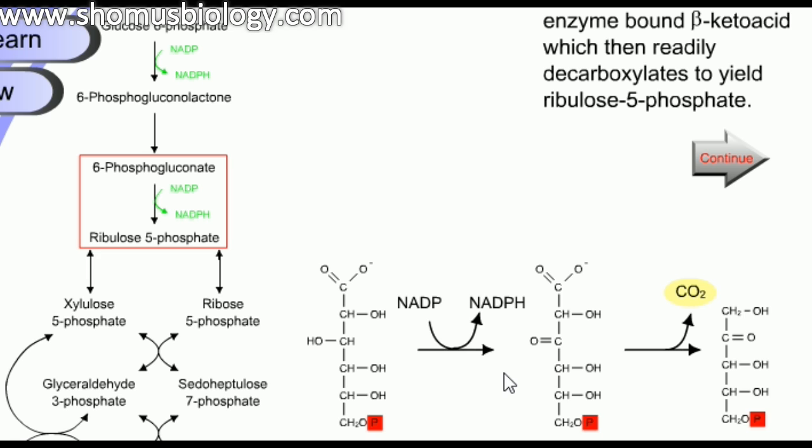The major importance of the pentose phosphate pathway is to generate NADPH, which is required for further processes inside the cell and to prevent the cell from oxidative damage. The second importance is that this pathway recirculates and shuffles between different carbon-number-containing sugar components — 6-carbon, 5-carbon, 7-carbon, 4-carbon, and 3-carbon sugar molecules. The enzyme 6-phosphogluconate dehydrogenase is always associated with NADP to NADPH conversion.